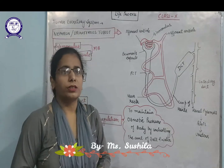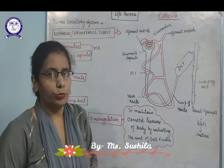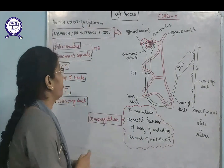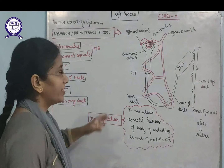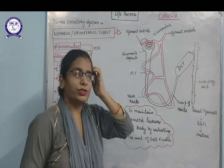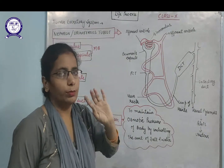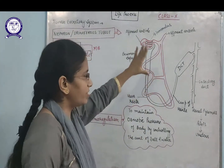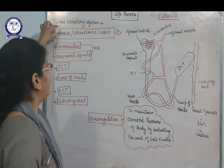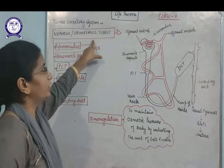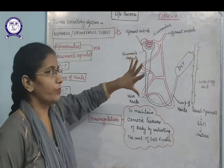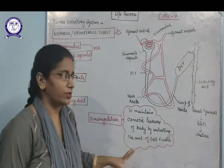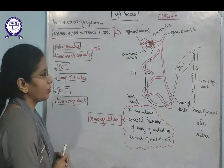Okay students, after discussing the human excretory system and the kidney, we will study the internal structure of the kidney. Inside the kidney, filtration of waste from the blood takes place with the help of the nephron. This is the structure of the nephron, also known as the uriniferous tubule, because it is the basic unit that filters waste.